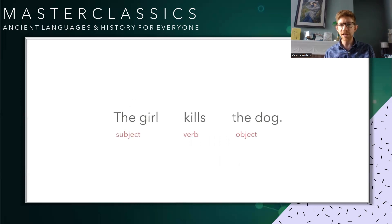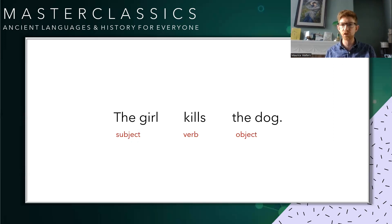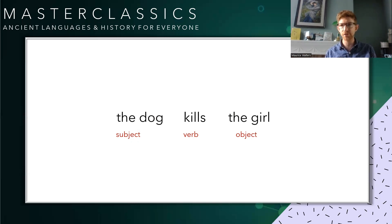Let's look at this English sentence: 'The girl kills the dog.' The girl and the dog are operating in two different capacities. We call the girl the subject, because she's the thing doing the action. We call the dog the object — that's the thing having the action done to it. And 'kills' in the middle is the verb. If we put 'the dog kills the girl', we know that sentence has changed.